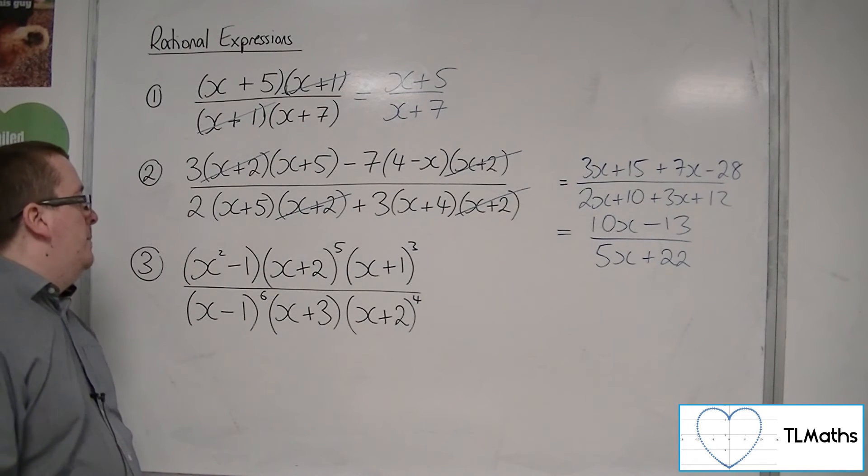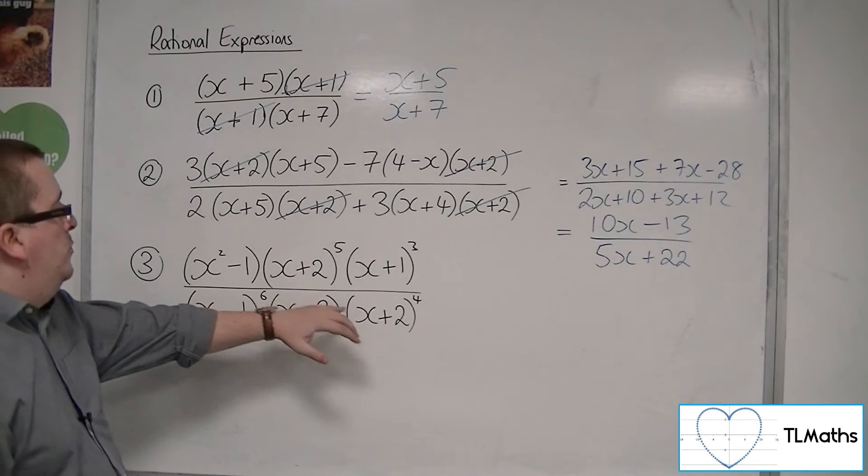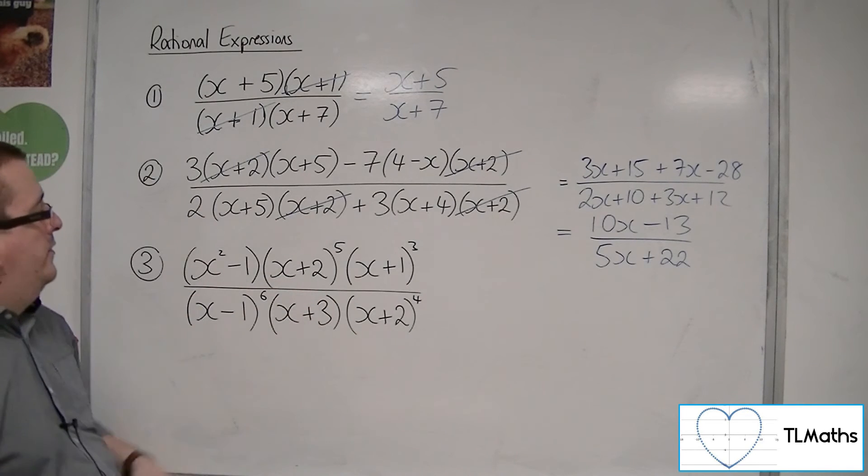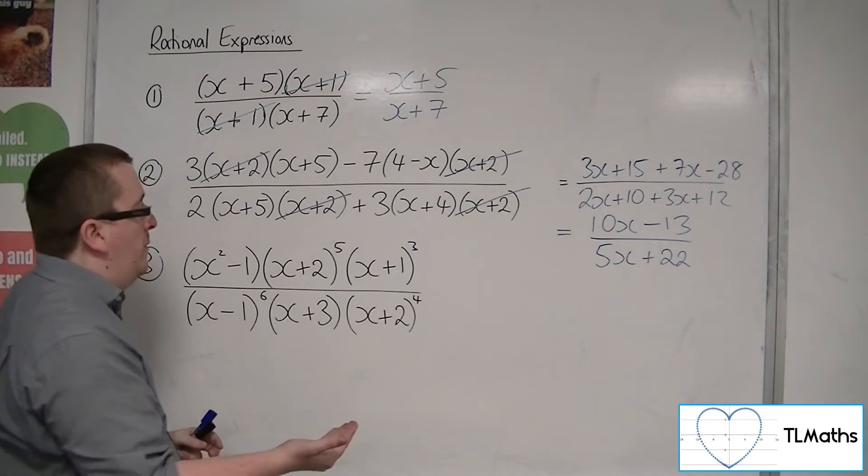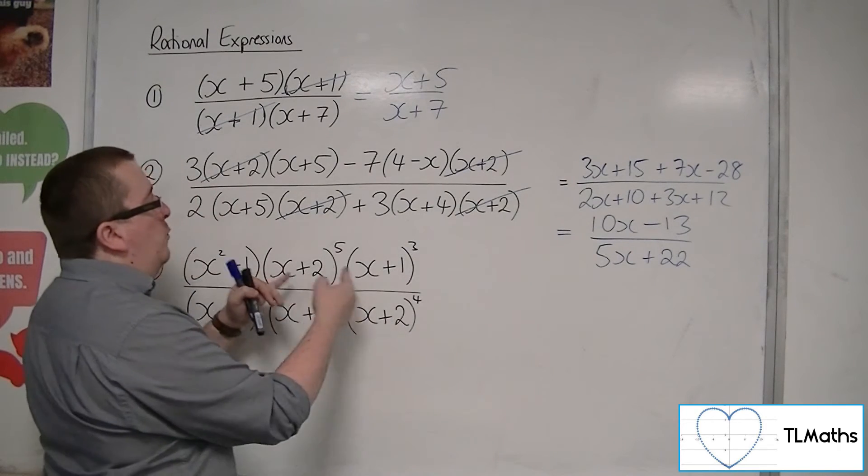Right, now let's have a look at number 3. So, what have we got? Well, we've got this x plus 2, which is common to both the numerator and denominator as factors. But we've actually got x plus 2 to the 4, which is common to the both.